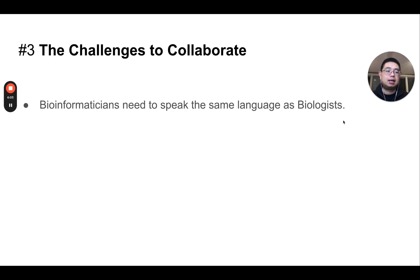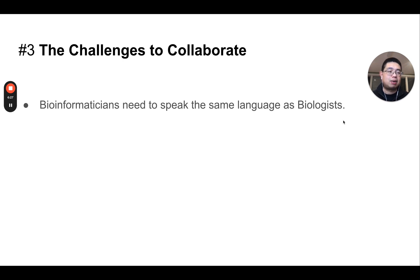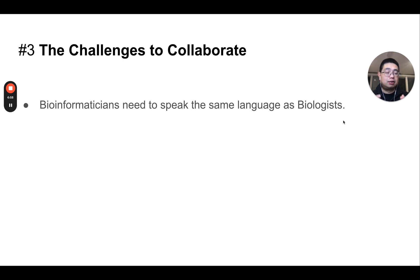Challenge number three is the challenge of collaborating with each other. Nowadays, it's never a one-man show anymore. It always requires collaboration between different teams — the computational team and the wet biology team — and they need to work really closely with each other. Bioinformaticians really need to speak the same language as biologists. I really encourage bioinformaticians to talk with wet biologists before experiments are even carried out — for example, to understand how many samples are needed for statistical power and how to design experiments without introducing batch effects. Bioinformaticians need to communicate with wet biologists at a very early stage.